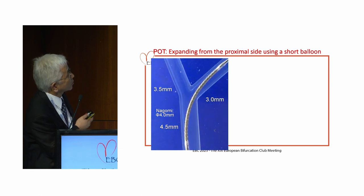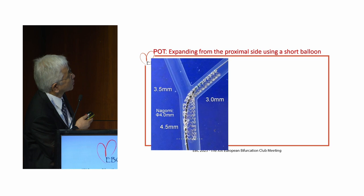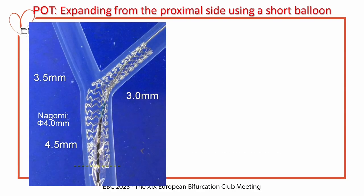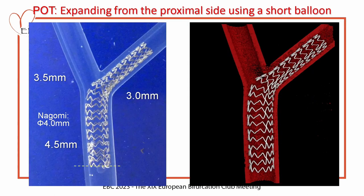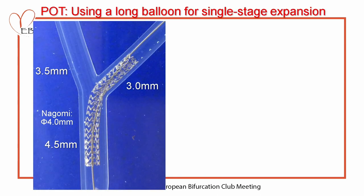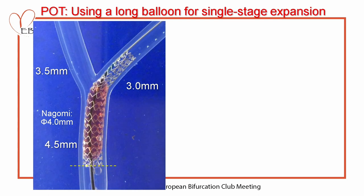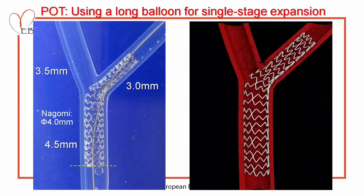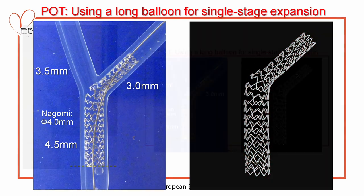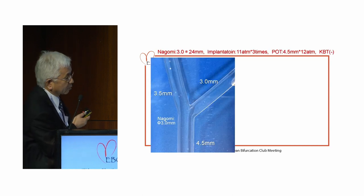In the same situation with a short balloon, I added the POT from the proximal part to the distal — the deformation was very minimal. If we perform with a long-size NC balloon, it's very easy with the same result. I compared 3.0 and 4.0 mm stents with low-pressure inflation three times and POT from the proximal part — totally the same result. However, with the 3.0 mm stent, the proximal part was totally stretched and could not be expanded further.